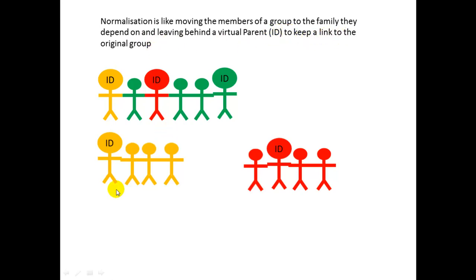These two groups are still linked to the original group via the IDs. That is just a primitive idea of what normalization is. In the next video we will watch how this is done using a table with data.